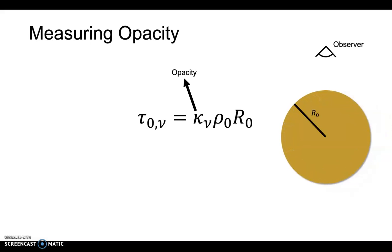One way to have a handle on opacity is if we know the optical depth and the column density along the line of sight. Qualitatively, we can express this relation for an edge-on disk as such. Where tau_0 is a characteristic optical depth, the column density along the line of sight is just the disk size, R_0, times some density, rho_0.